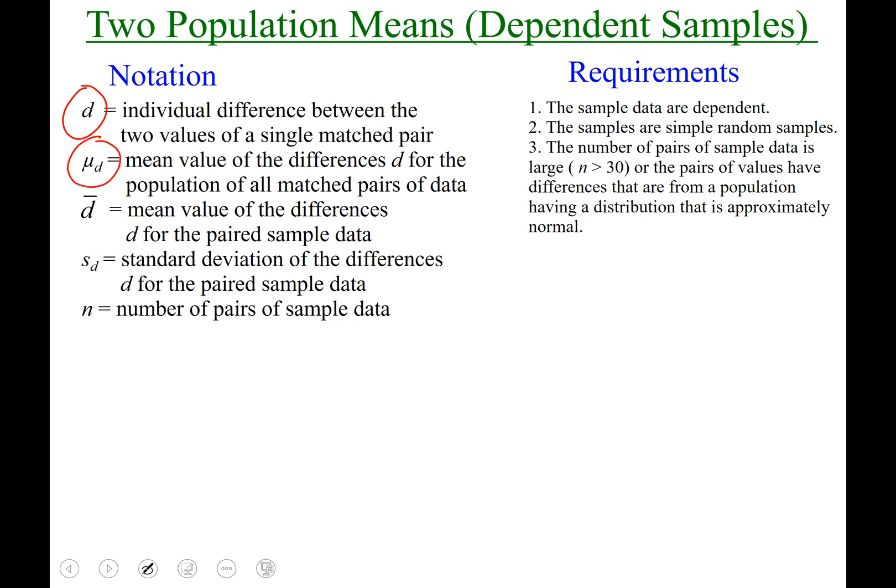Mu, you guys are used to mu, but you haven't seen it with that sub d and that would represent the mean value or the average, if you need to think of it that way, of the differences of the population of all matched pairs of data.